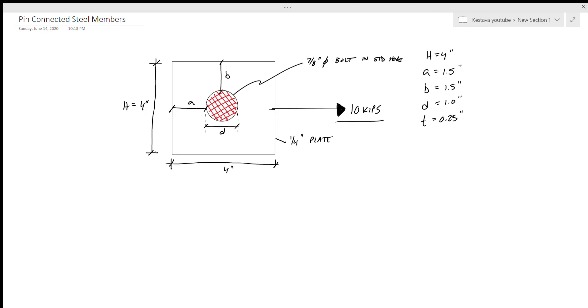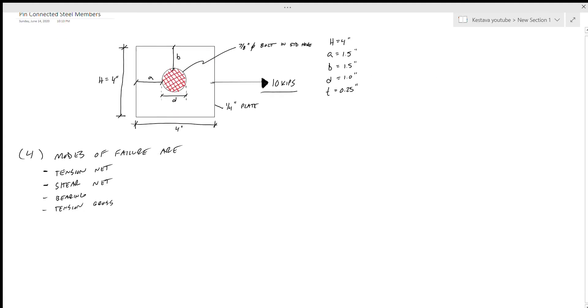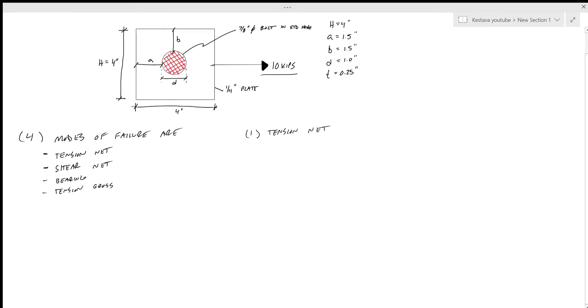I guess before I get into our first one, I will clarify what the four modes of failure are: tension on the net effective area, and I will make a diagram of each of these; shear of the net effective area; bearing; and tension gross. Let's jump into the first here.